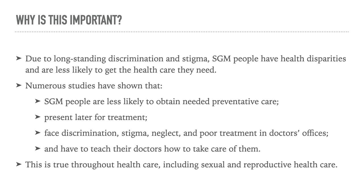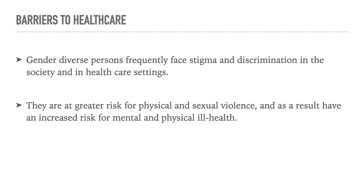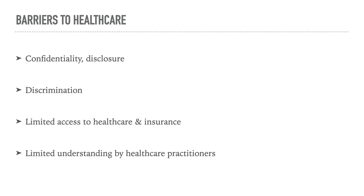Due to long-standing discrimination and stigma, SGM people have health disparities and are less likely to get the health care they need. Numerous studies have shown that SGM people are less likely to obtain necessary preventative care, present later for diagnosis and treatment, face discrimination, stigma, neglect, and poor treatment in doctor's offices, as well as having to teach their health care workers how to take care of them. This is true throughout all spheres of health care, including sexual and reproductive care. Gender-diverse persons frequently face stigma and discrimination in society and in health care settings, and as a result are put at greater risk for physical and sexual violence and have an increased risk of mental and physical ill health. Some of the barriers they struggle with include confidentiality and disclosure of their gender identity and sexual preference, discrimination by staff, limited access to health care and insurance, as well as limited understanding by health care practitioners.